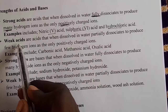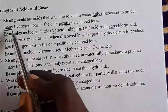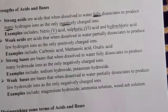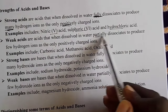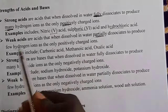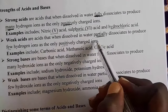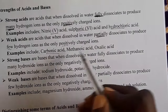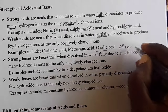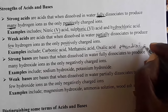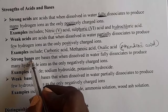What are weak acids? From the definition of strong acids, where you see 'fully' you change to 'partially,' and where you see 'many' you change to 'few.' Weak acids are acids that when dissolved in water partially dissociate to produce few hydrogen ions as the only positively charged ions. Examples include carbonic acid, methanoic acid, and oxalic acid (also called ethanedioic acid).